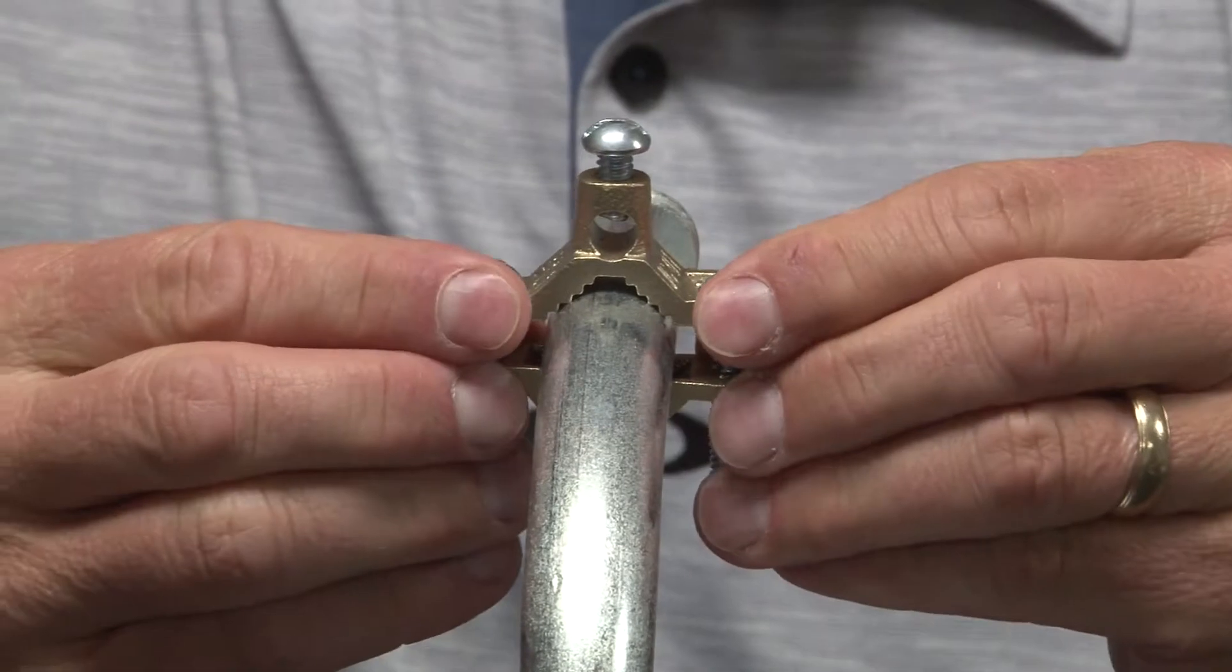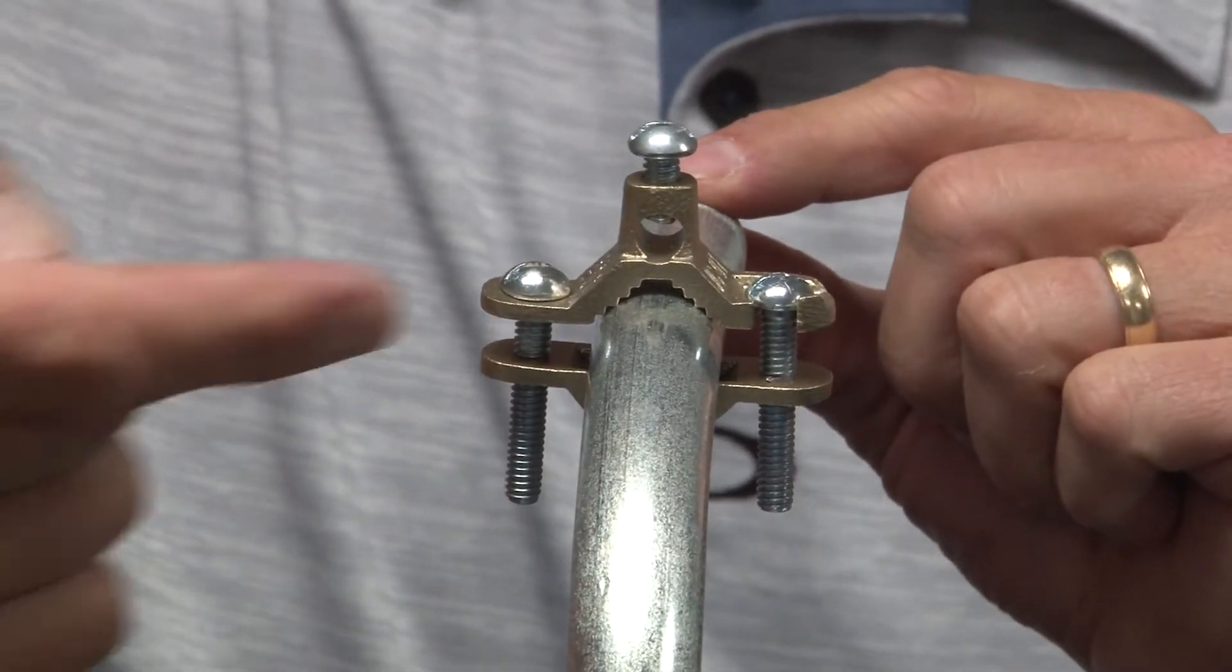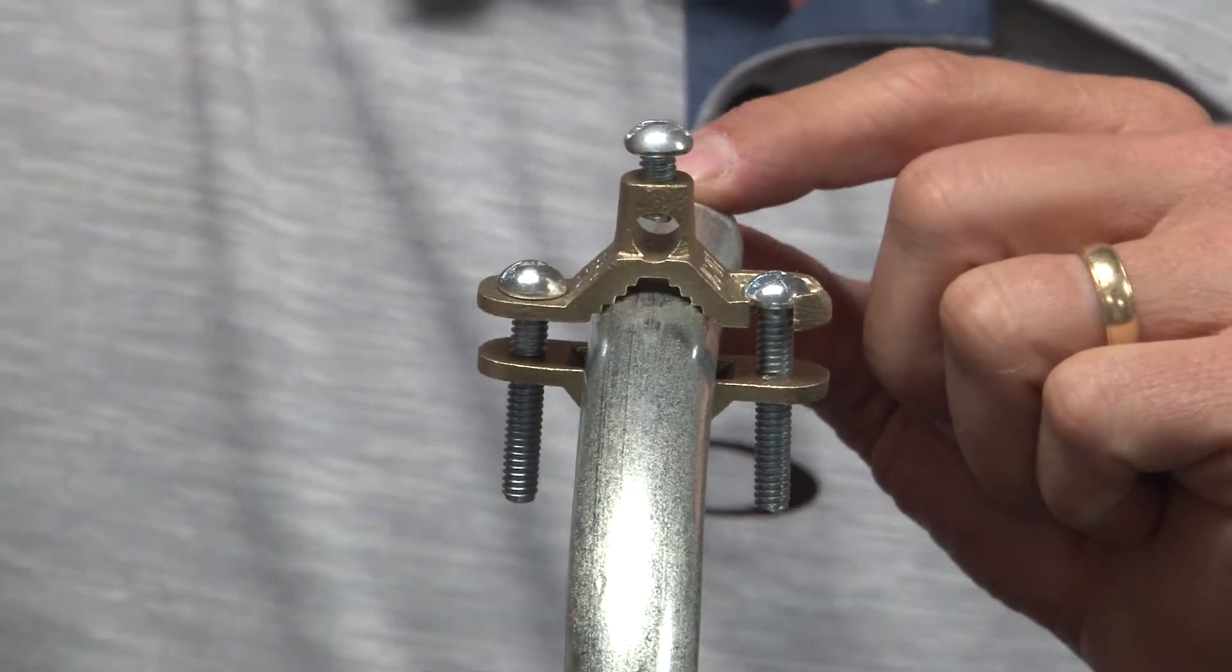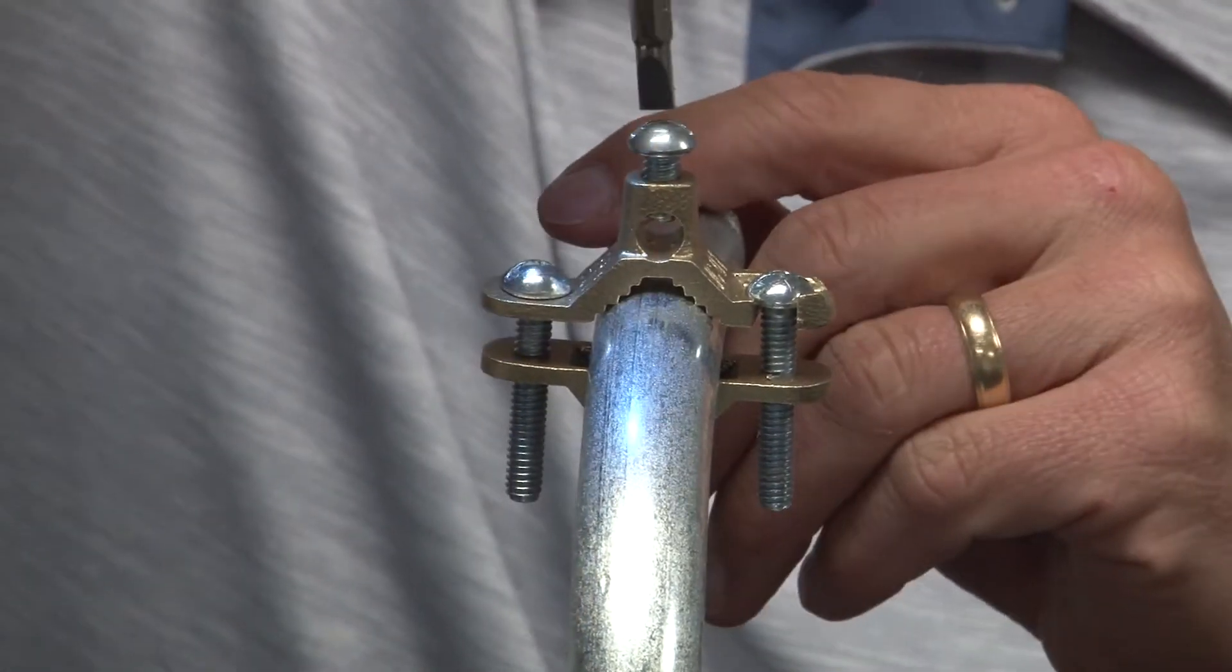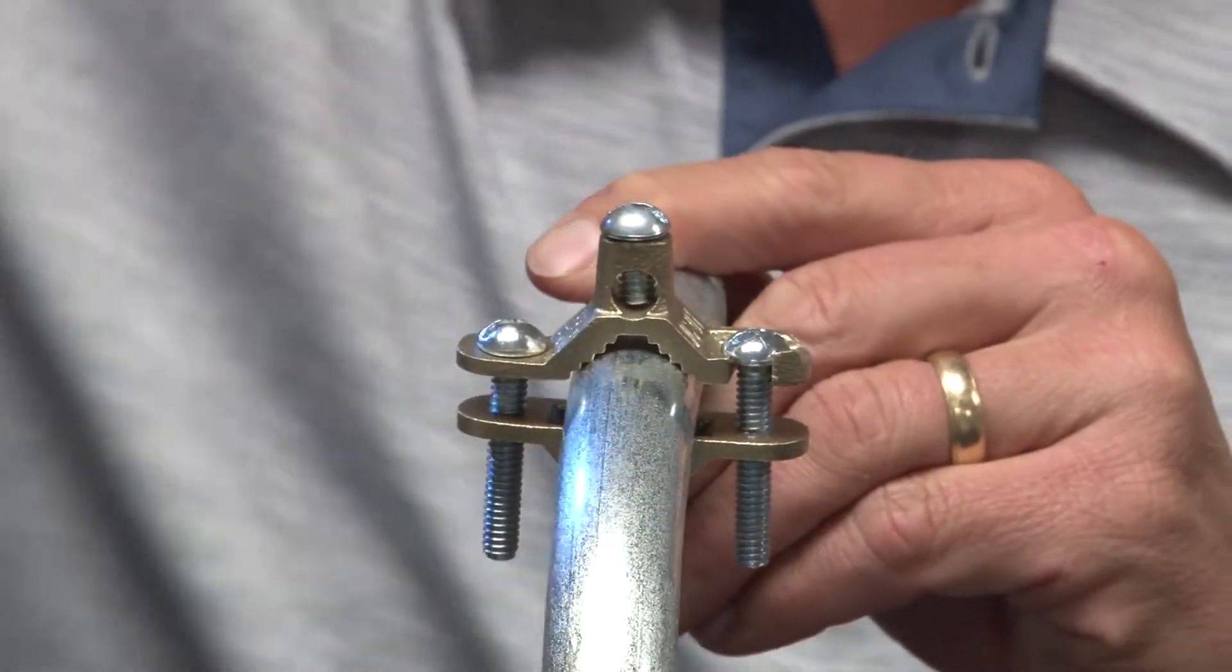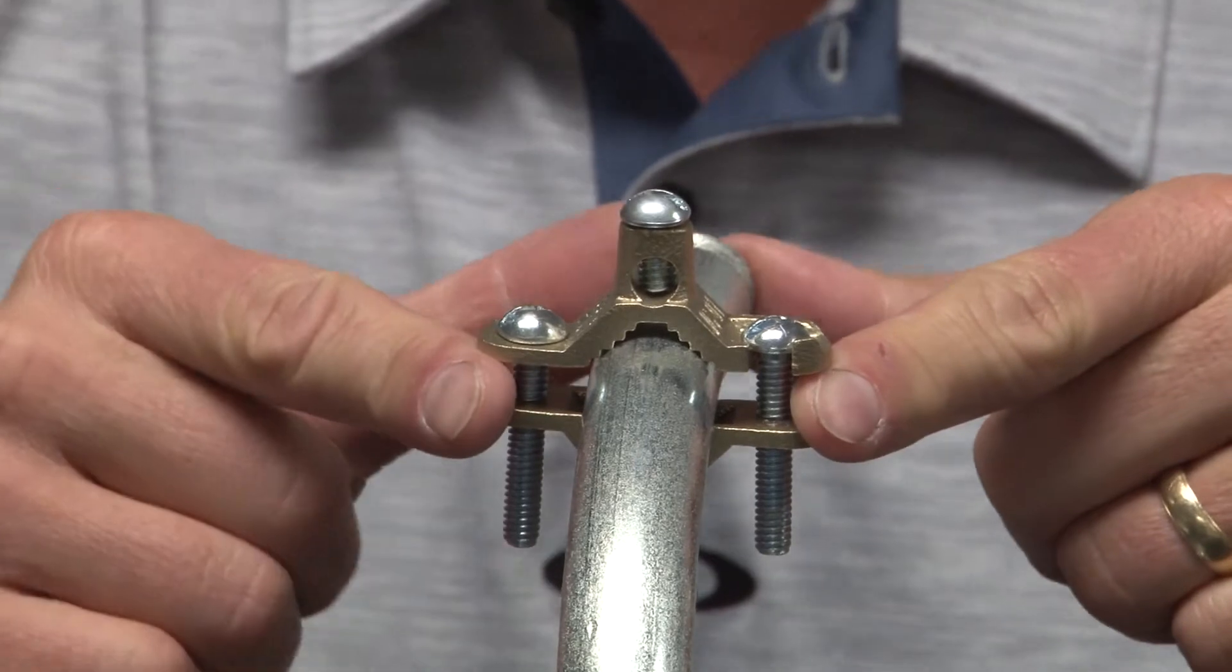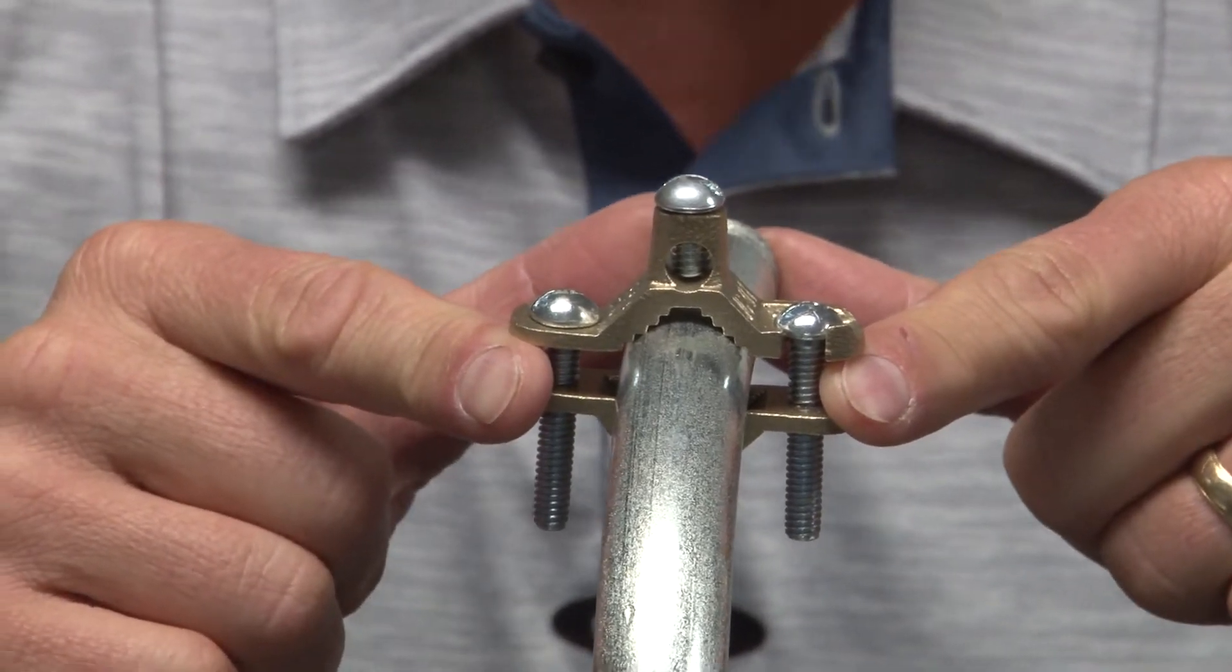Once you have a good tight bond with the clamp to the water pipe, you simply insert the ground wire through the top hole. As you'll see, the set screw bites against the ground wire, holds it in place, and ensures that you have a good bond for your electrical system to the earth.